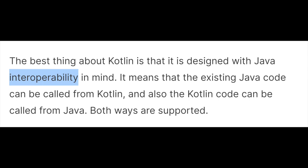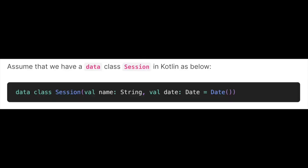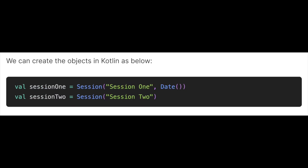As we are going to learn about the JvmOverloads annotation, we will focus on calling Kotlin code from Java. Let's take an example. Assume we have a data class Session in Kotlin with a name of type String and a date of type Date. We can create objects in Kotlin — session1 with a date, and session2 without the date because we have already provided a default value for it.